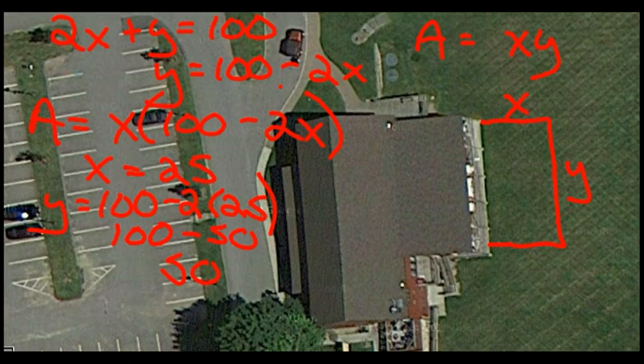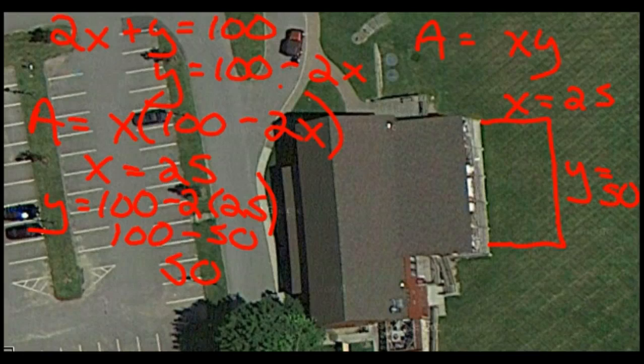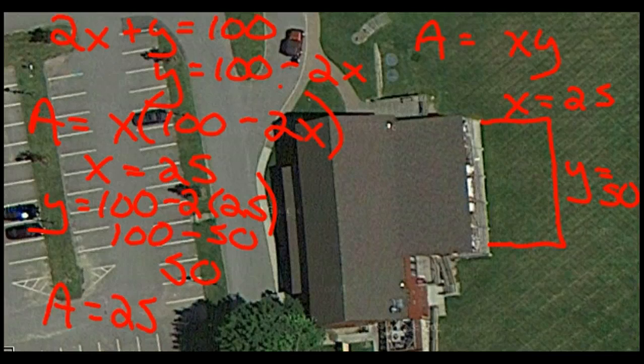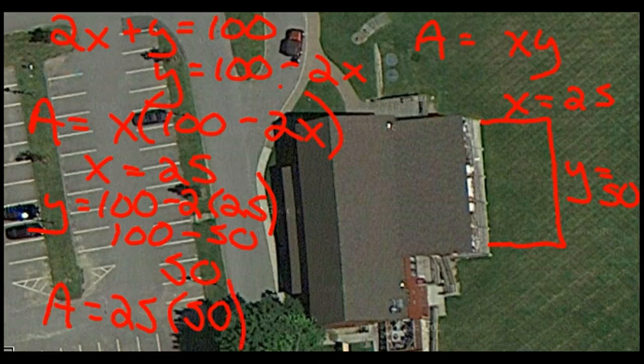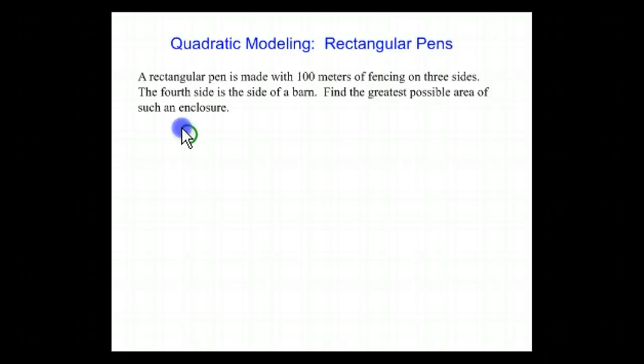This y is the dimension of the barn. x is 25, y is 50. So the area equals 25 times 50, which is equal to 1,250. We knew that from before. So the dimensions of the pen are 25 times 50, and the area is 1,250. The dimensions, these were done in meters, but the area is in square meters.